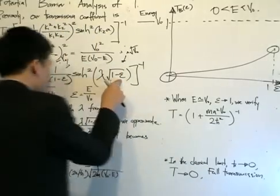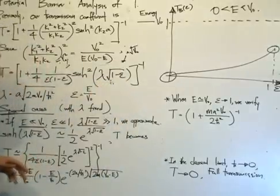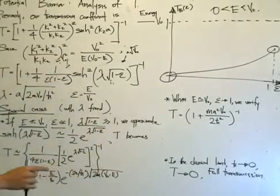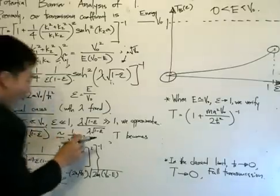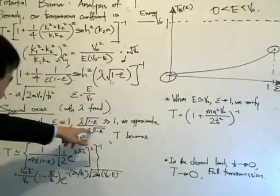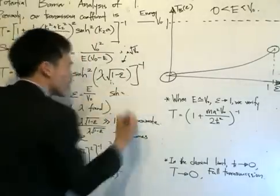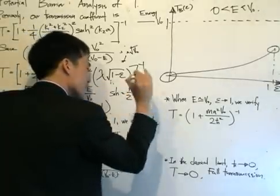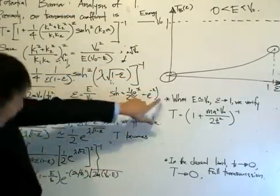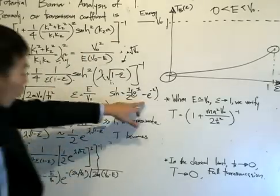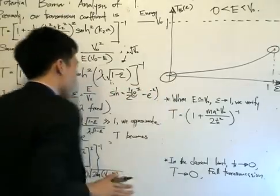When λ·√(1−ε) is much greater than one, we approximate the hyperbolic sine of [λ·√(1−ε)] as one-half times e raised to the power of λ·√(1−ε). This comes from the definition: sinh(x) = ½(eˣ − e⁻ˣ). Since the exponent is greater than one, e to that power is a very large number, so 1 divided by that large number equals zero. That's why the e⁻ˣ term is irrelevant, leaving just half times e to the power of λ·√(1−ε).